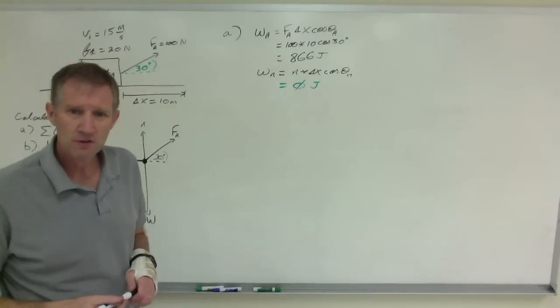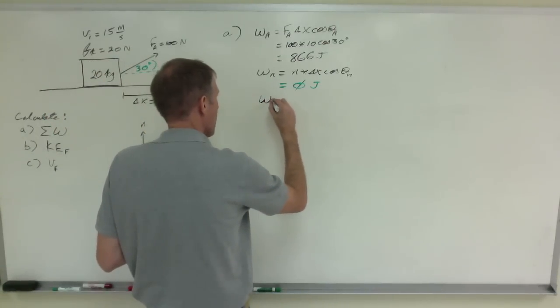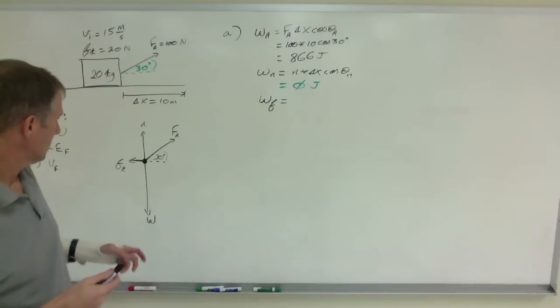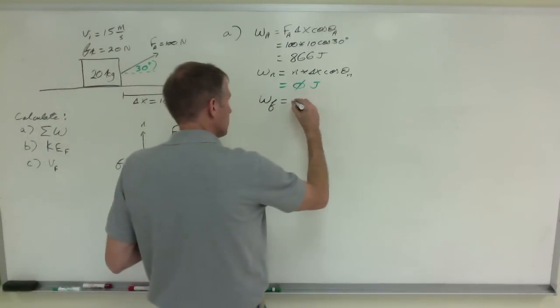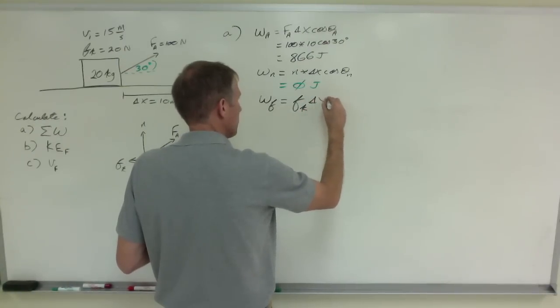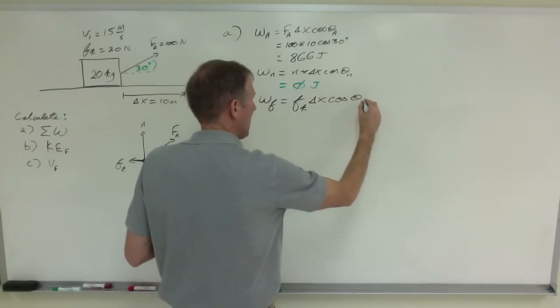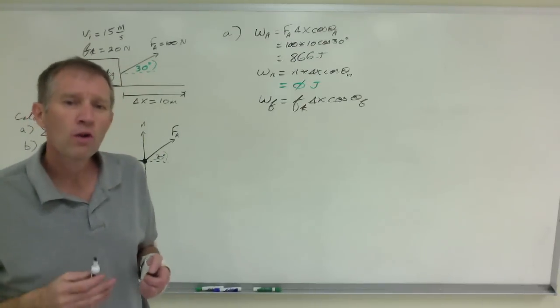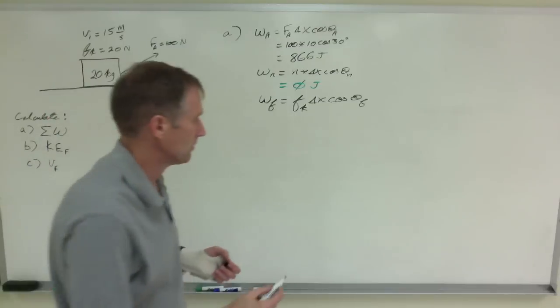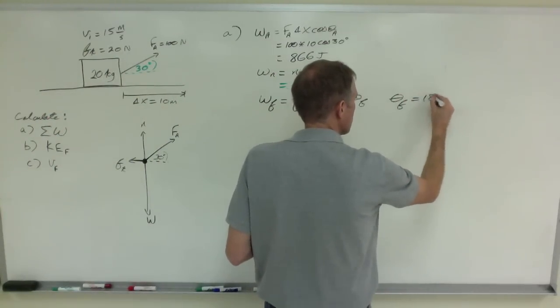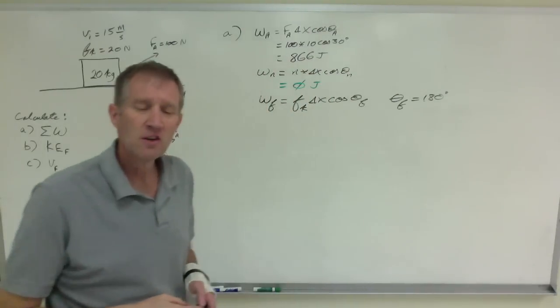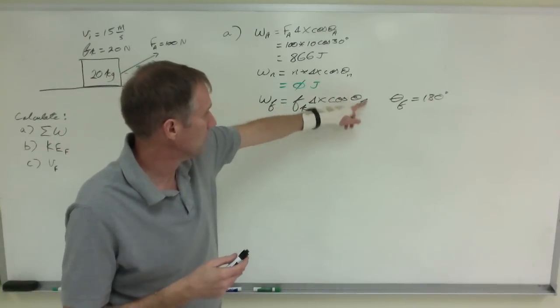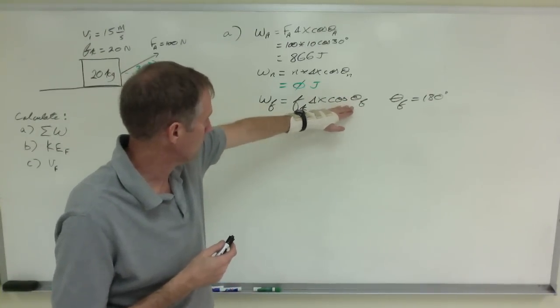What about the work due to friction? Friction always acts against a system. Work due to friction is the kinetic friction times the displacement times the cosine of that angle. The angle between friction and the direction of motion will always be 180 degrees without exception. That's not a simplification. It's always true. And the cosine of 180 degrees is negative one. And so this term, you don't need your calculator for it. It's always going to be negative one when you're talking about friction.